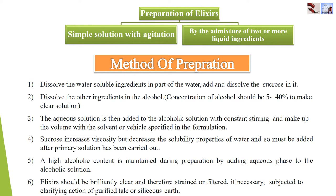Here you can see the different methods of preparing elixirs. The first is simple solution with agitation, and the second is by the admixture of two or more liquid ingredients. Both these methods can be used to prepare any elixir in industry and in the lab. For lab purposes, we mainly use simple solution with agitation to prepare non-medicated elixir.